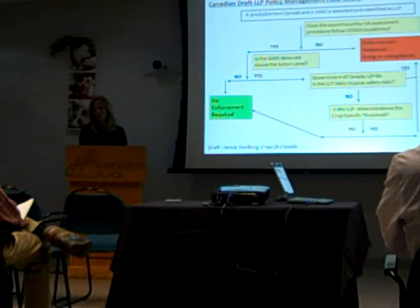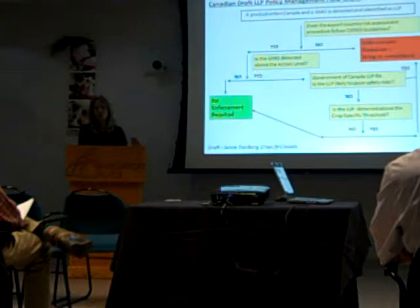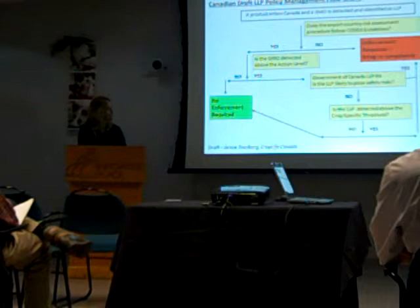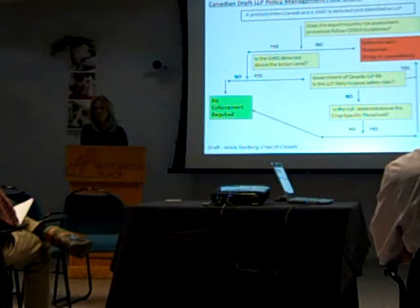If the level is above the action level, the Government of Canada will conduct a low-level presence risk assessment — not a full assessment, but following the Codex Plant Guidelines LLP annex. After that, they'll ask: is the LLP likely to pose safety risks? If yes, it goes back to enforcement. If no, the next question is: is the LLP detected above the crop-specific threshold? These thresholds haven't been set yet. If yes, it goes back to enforcement; if no, it will be allowed to come in.